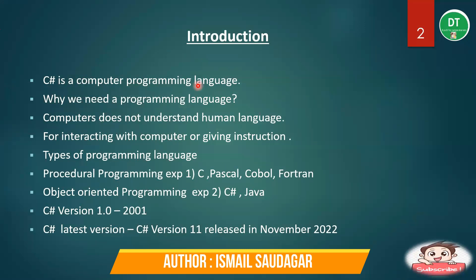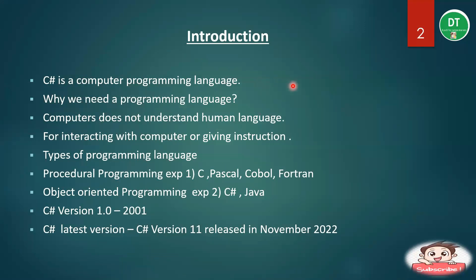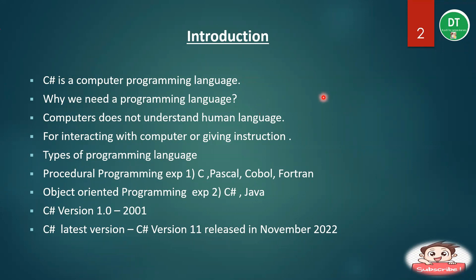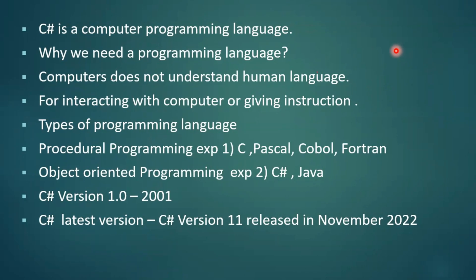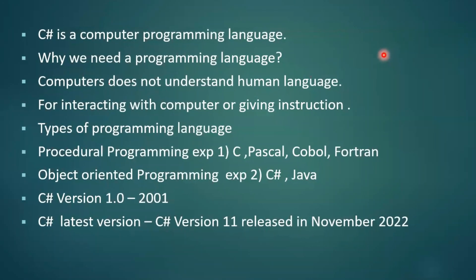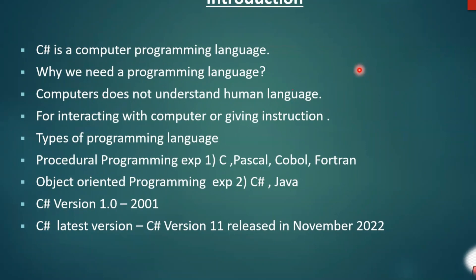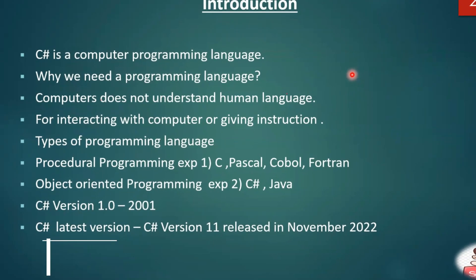C# is a computer programming language — a language by using which we write a computer program. We need a programming language because the computer does not understand human language; it only understands binary language. Humans cannot write binary language because it would be very difficult, so scientists have developed programming languages which a human can learn easily and the output is converted into binary language that the computer can understand.